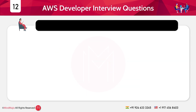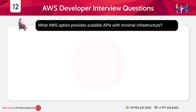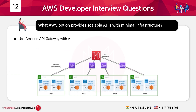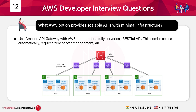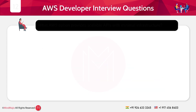Question 12: What AWS option provides scalable APIs with minimal infrastructure? Answer: Use Amazon API Gateway with AWS Lambda for a fully serverless RESTful API. This combination scales automatically, requires zero server management, and integrates with DynamoDB or S3 easily.